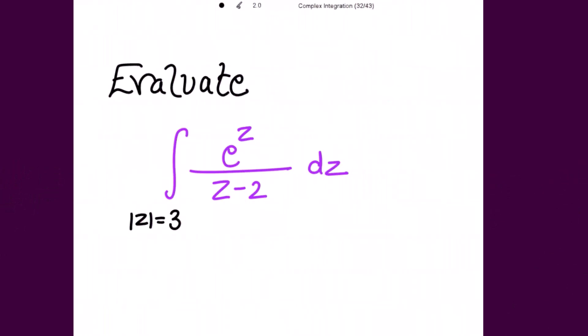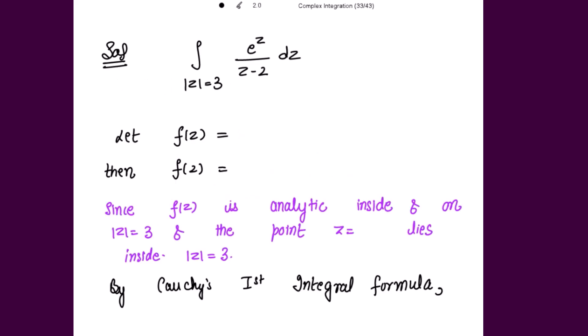We need to evaluate the integral of e to the power z over z minus 2 for the circle |z| equal to 3. Here the function given to us is e^z and the value for z_0, if you put the denominator equal to 0, you get this value to be 2.